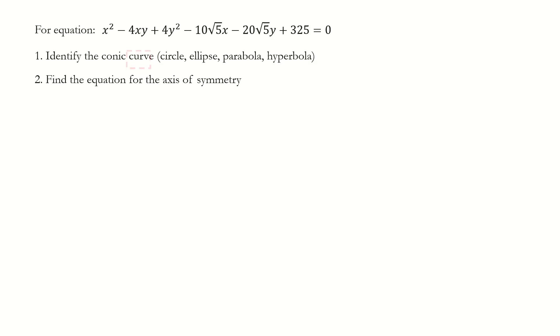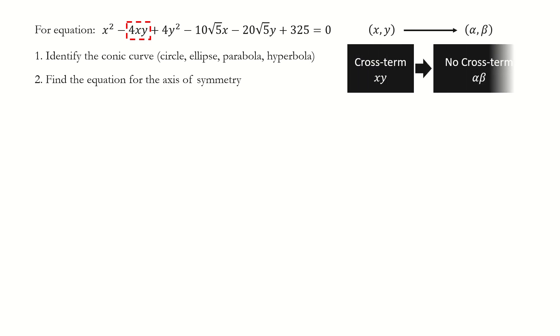We can see this equation contains the cross term xy. So we want to find a linear transformation, for example, to transform the xy coordinate to the alpha-beta coordinate. And in the alpha-beta coordinate, this equation doesn't contain any cross terms.